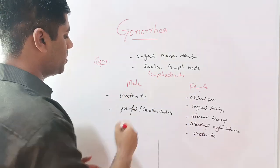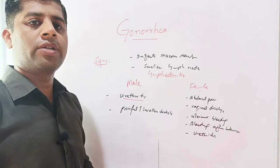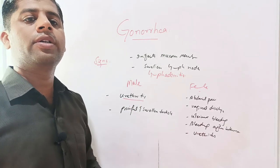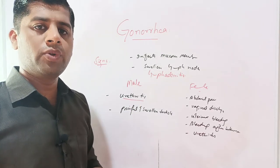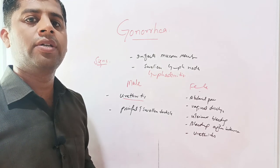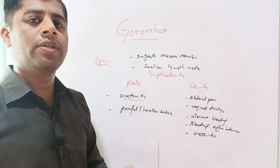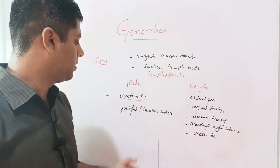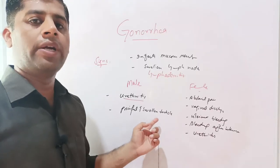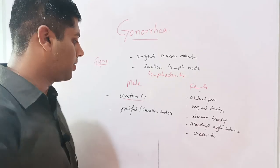In males, gonorrhea causes urethritis — inflammation of the urinary tract — accompanied by painful urination, burning sensation, and pus formation with oozing of pus from the tip of the penis. The testicles are also painful and swollen, causing orchitis.